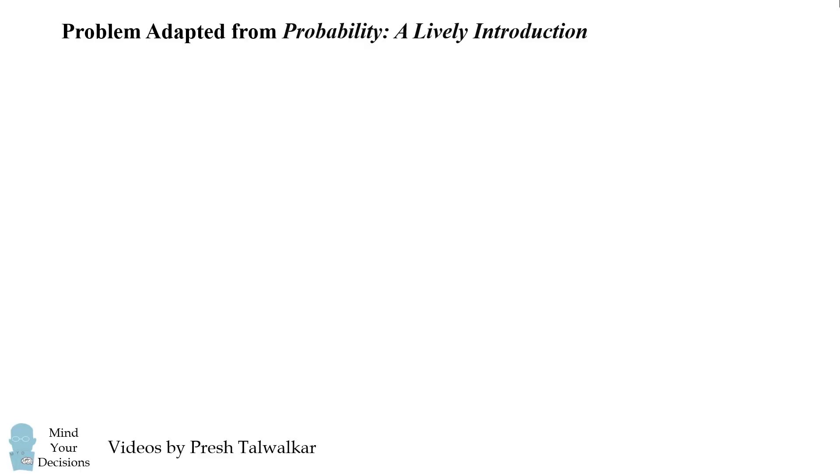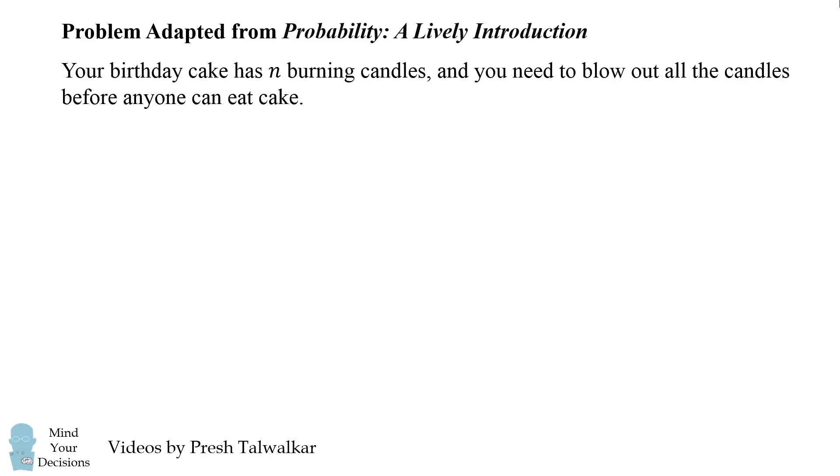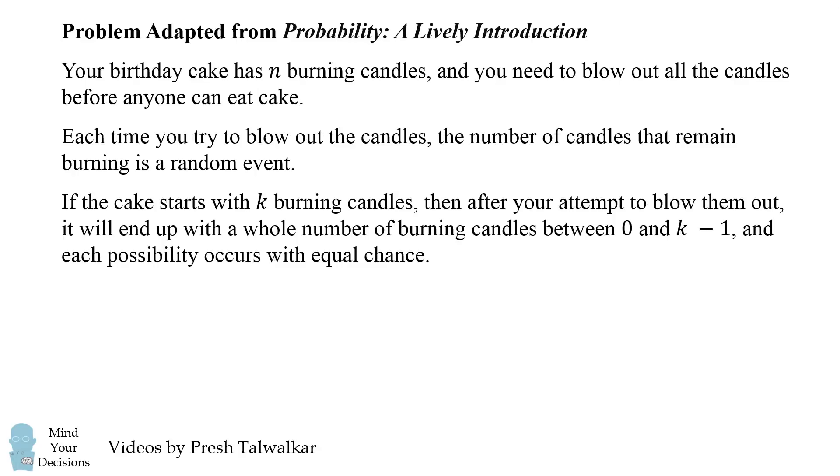The puzzle in this video is adapted from Probability, A Lively Introduction. Your birthday cake has n burning candles, and you need to blow out all the candles before anyone can eat cake. Each time you try to blow out the candles, the number of candles that remain burning is a random event. If the cake starts with k burning candles, then after your attempt to blow them out, it will end up with a whole number of burning candles between 0 and k-1, and each possibility occurs with equal chance.